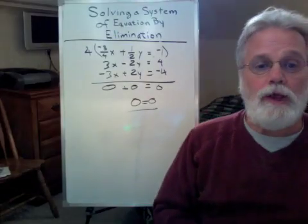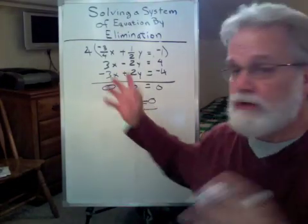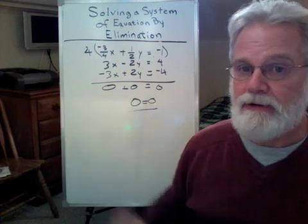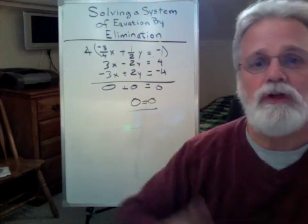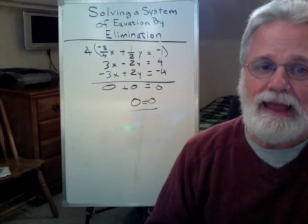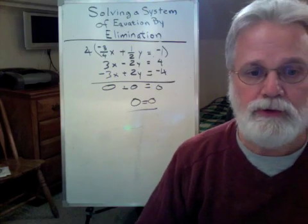My variables are all gone. And I have a consistent statement. Zero equals zero. Can't get any better than that. Zero is always going to equal zero. So, what you've got here is you've got an infinite number of solutions. You have a consistent and dependent set of linear equations.